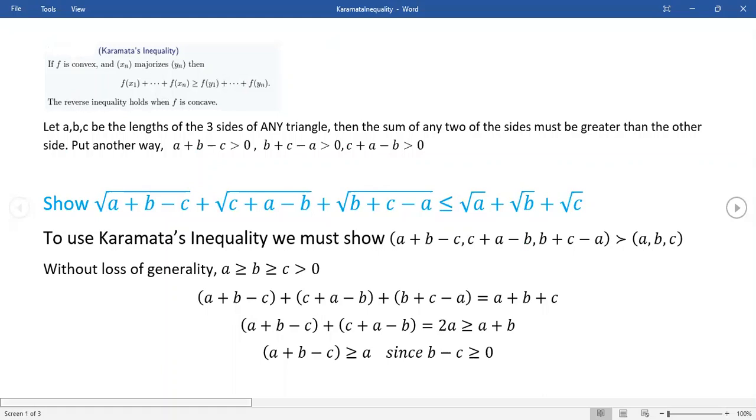Good morning, everybody. I'm coming to you with a problem. I think it's from the APMO 1996 competition. And the conditions are, let ABC be the length of the three sides of any triangle. This is any triangle at all. It makes no difference what type of triangle, scalene, equilateral, whatever.